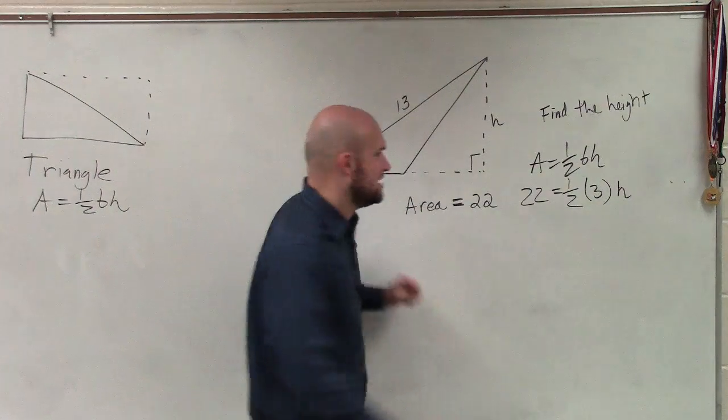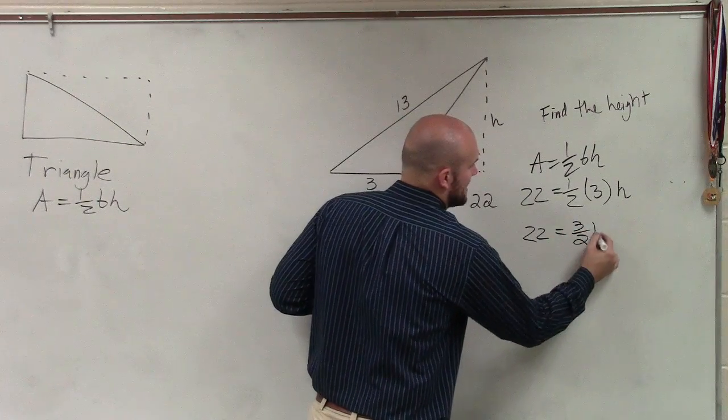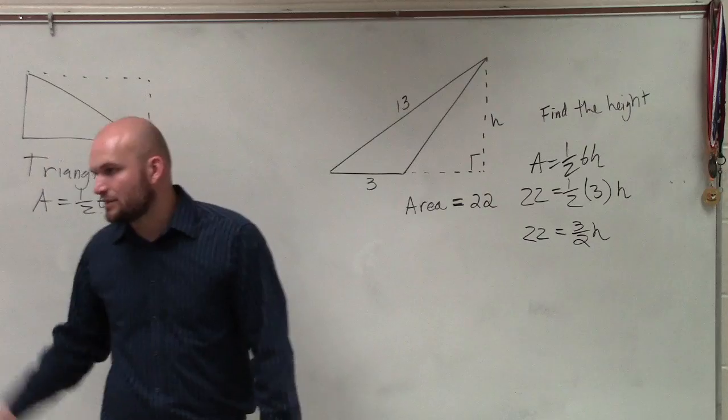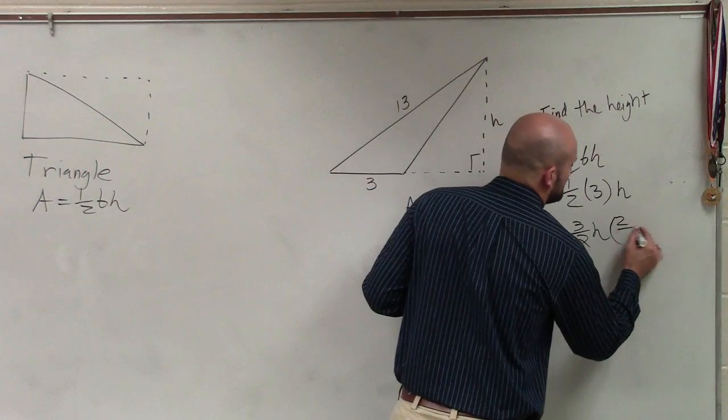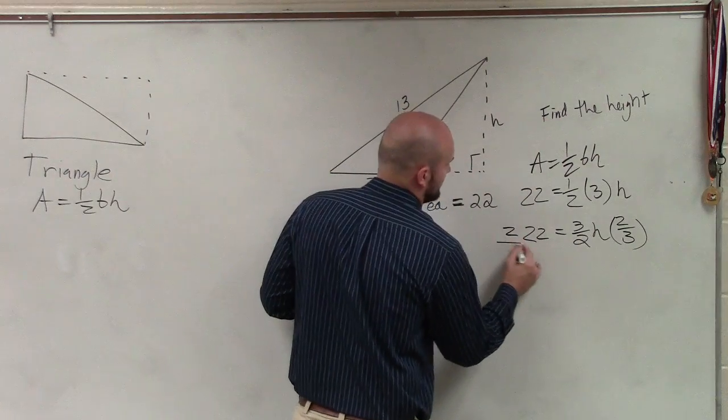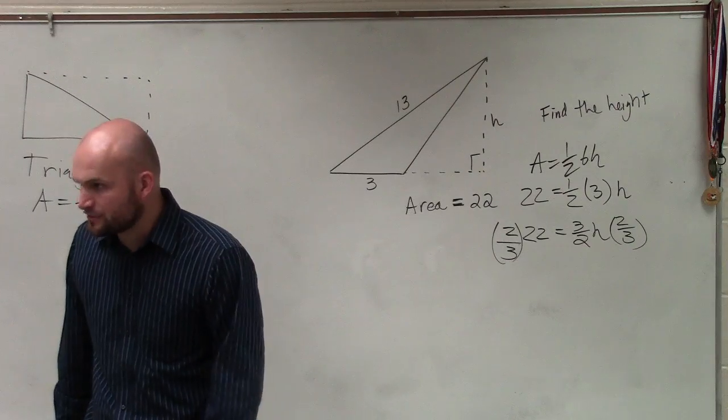You could also just multiply these across. So it would be 22 equals three halves times H. Same exact. Then if you want to get rid of the fractions, Terrell you're missing this information, you'd multiply by the reciprocal. Which is the exact same thing you just told me to do, right? Multiply by two, divide by three.